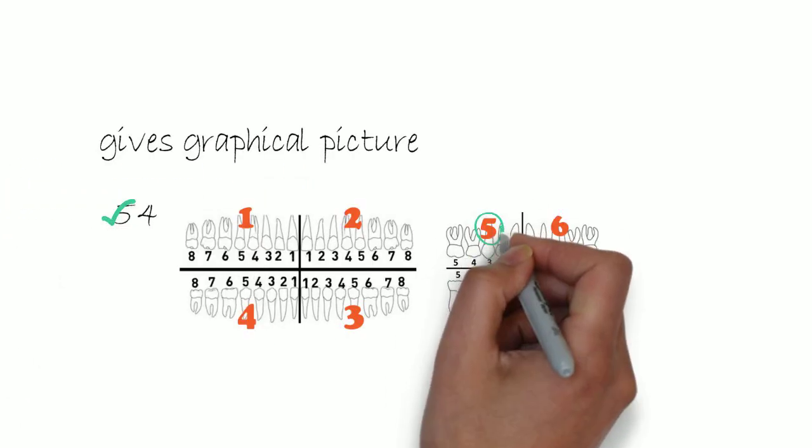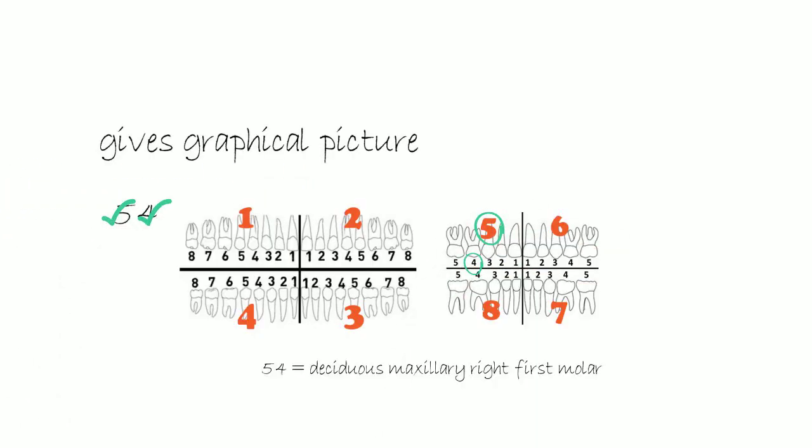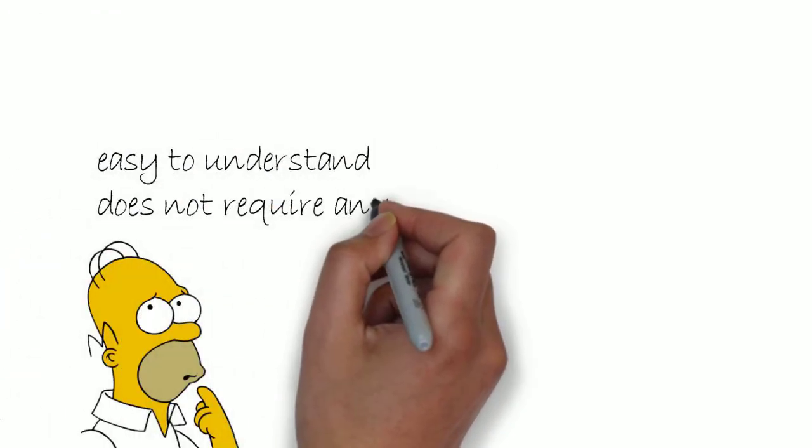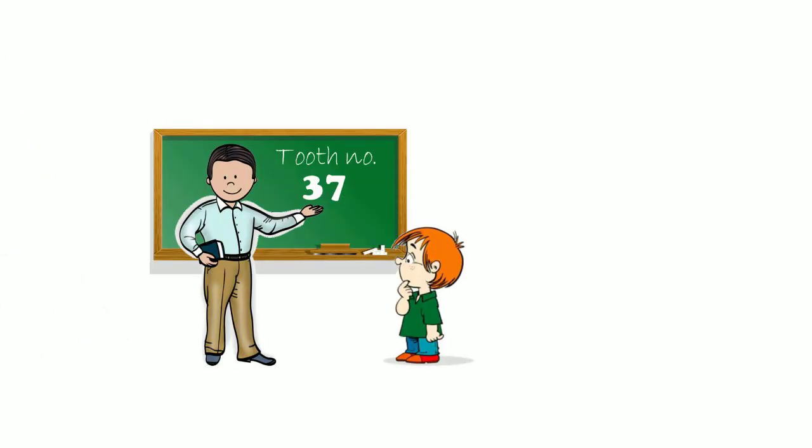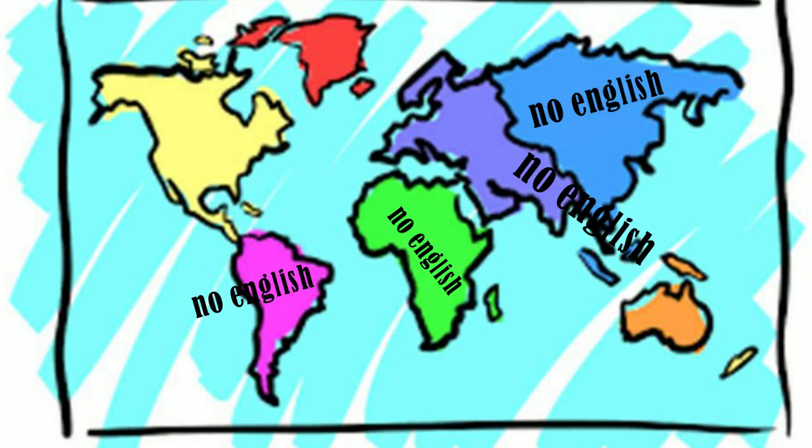Like the Zigmundi-Palmer system, it gives a graphical picture in the mind as it divides the jaws into quadrants. It is simple to understand and does not require any memorization. Moreover, it can be communicated verbally and on electronic media. Also, the removal of English alphabets attempts to make this symbol truly international.